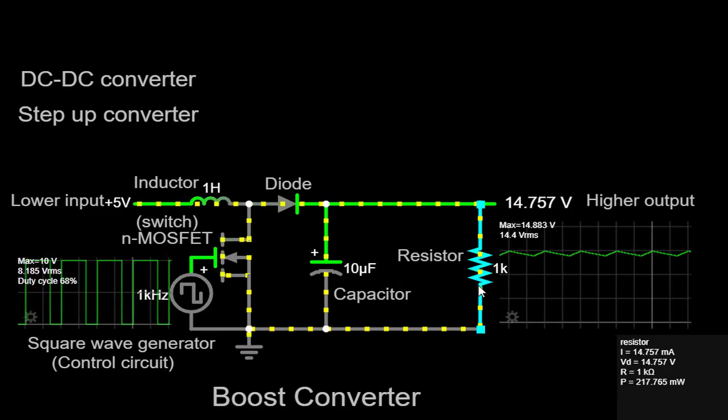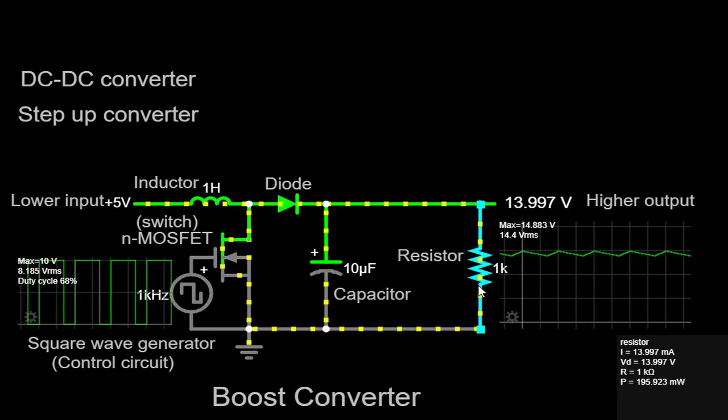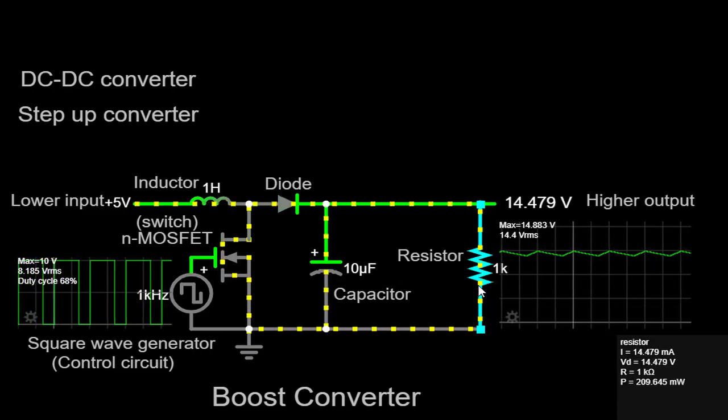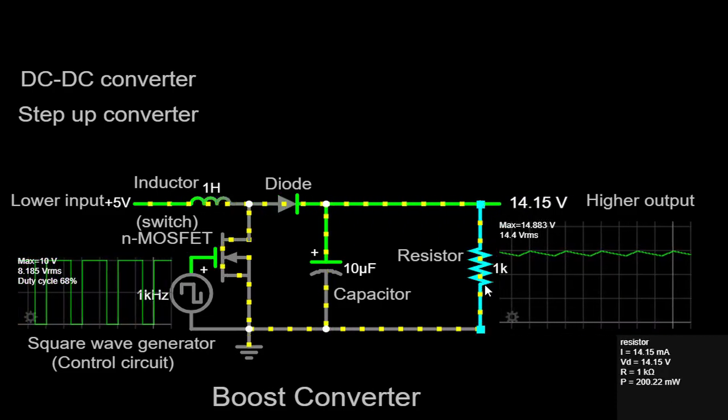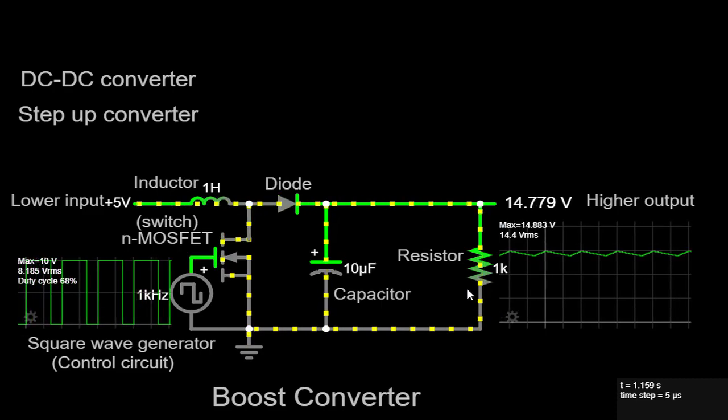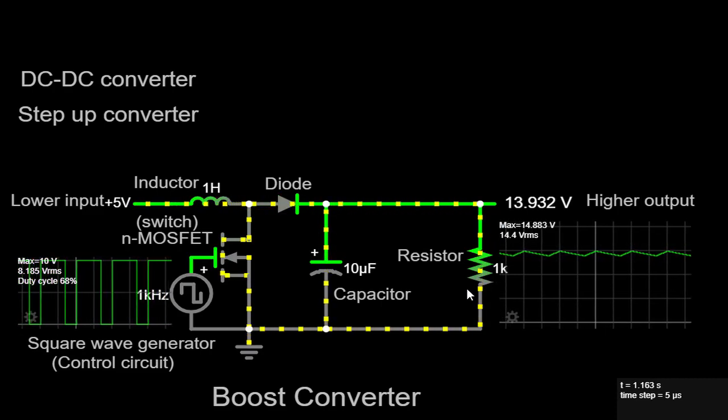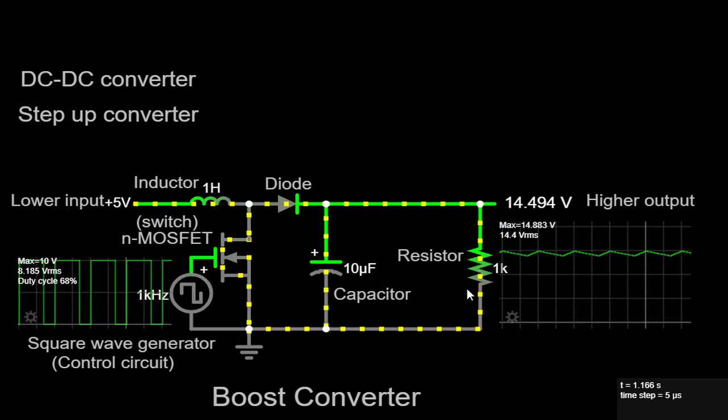Finally, we have a resistor of 1K connected as a load, and the output voltage is displayed on the oscilloscope. Now, let's delve into how the boost converter operates. It functions based on the principle of energy storage and release in the inductor.